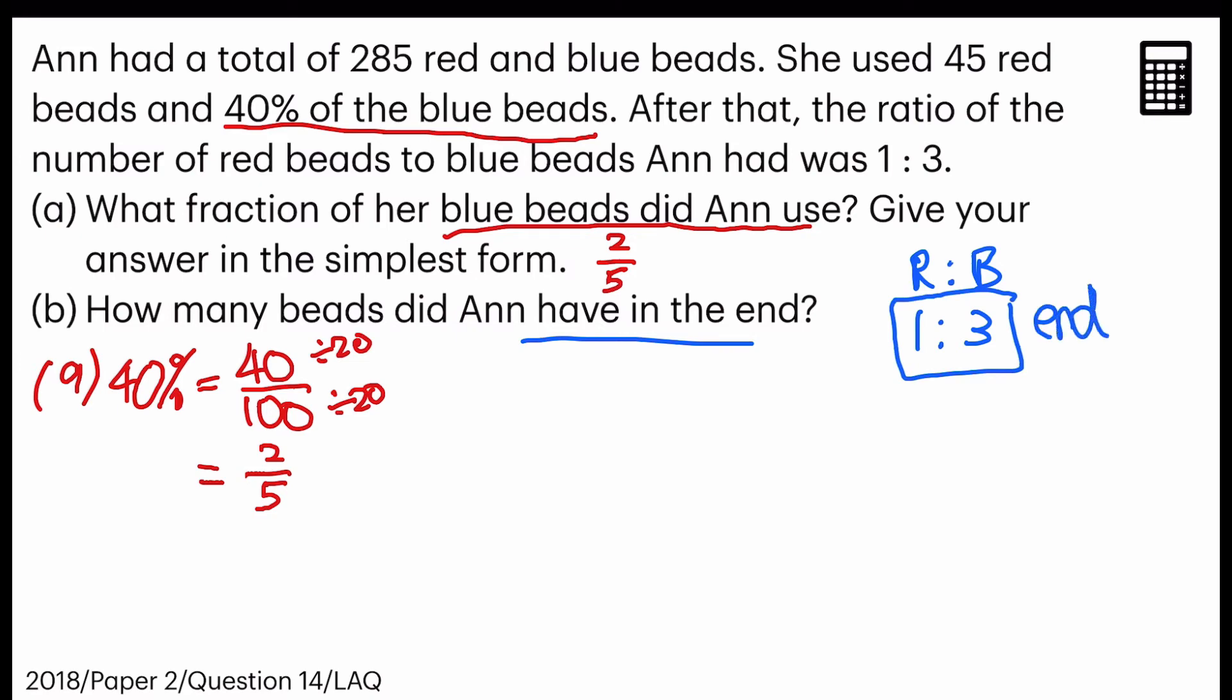But remember just now, we have already found out that at the beginning, there were 5 units of blue beads. And since Ann used 2 units, the remaining is 3, which is just nice. Which means the ratio before would be 1 is to 5.